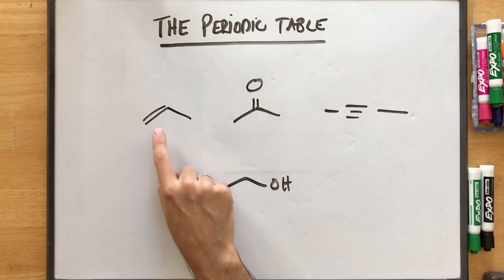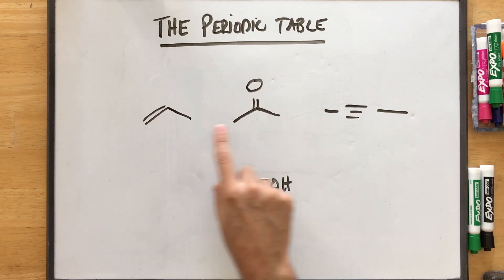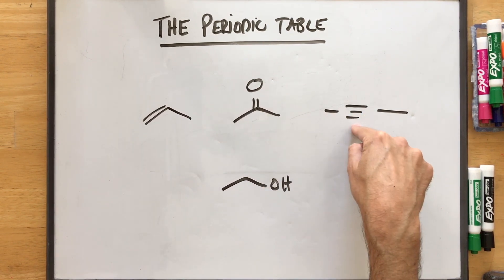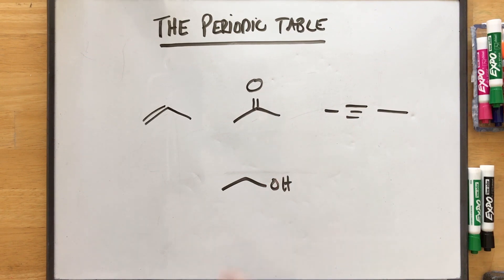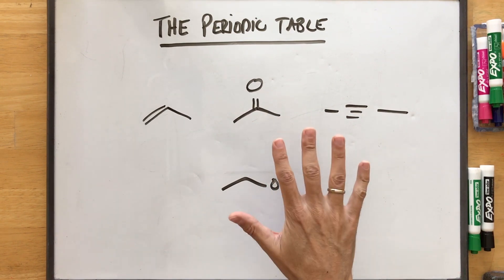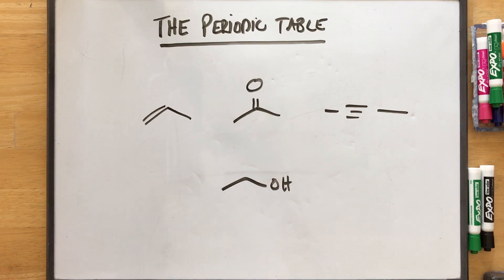So every chapter is based off of a functional group. And a functional group is the part of the molecule, like I said, that allows you to do something. So this is what's known as an alkene. This is what's known as a carbonyl. This is what's known as an alkyne. This is what's known as an alcohol. But basically, you're going to be taking these and learning exactly what are they, what can they do, and how can you apply them.